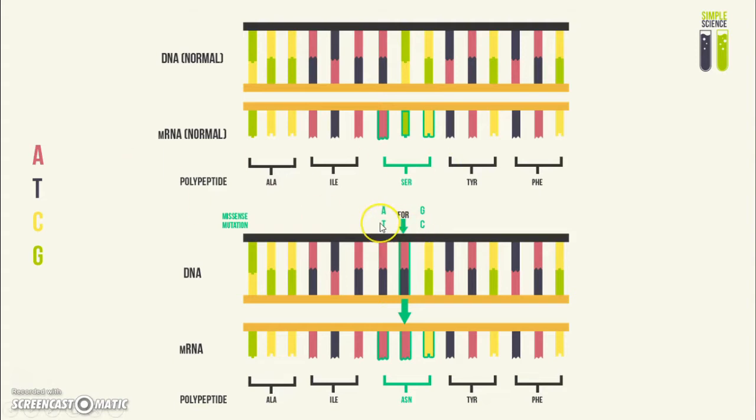However, when a missense mutation occurs, there is the base A that replaces the base G. Of course, in the antisense strand it is mutated too, but we're more interested in the sense strand. The base A is taking the place of the base G, so then in the mRNA molecule that is mutated, there will be the base A instead of a base G.